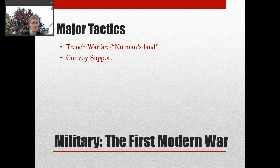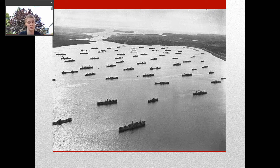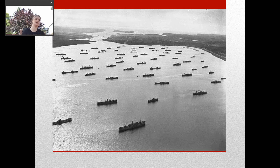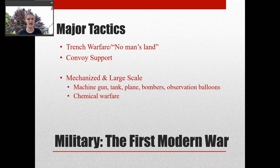The next tactic is convoy support. If you remember from the first video, I was talking about German U-boats. Convoy support was a way to protect against them. When passenger and merchant vessels were going across the ocean, they would send big convoys — military ships, planes, and so on — to help lead the ships back and forth and protect them against German U-boats. That was a way to fight that threat.